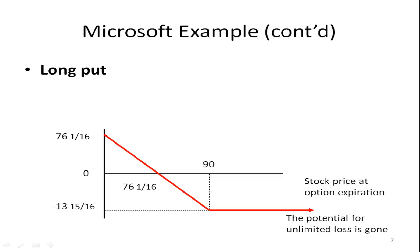Let's see what that looks like in the diagram. If the price falls to zero, your profit is seventy-six and one-sixteenth. The most you can lose is thirteen and fifteen-sixteenths, which occurs if the price rises to ninety. At ninety dollars a share it flattens out. Why does it flatten out? Because for every dollar it goes above ninety, you lose a dollar on your short position but you make a dollar on the call option. So the call option limits your losses — that's why we have this horizontal line here.